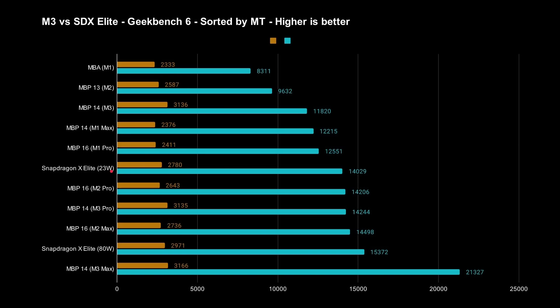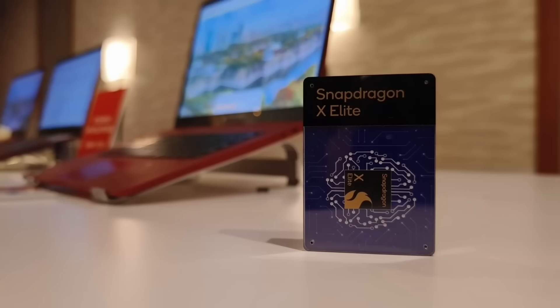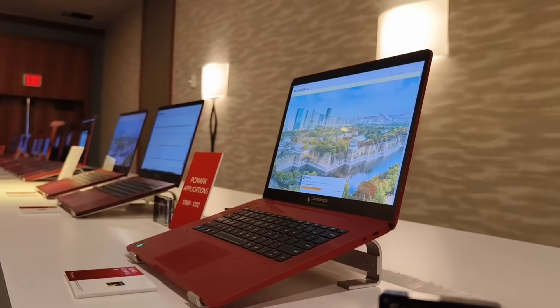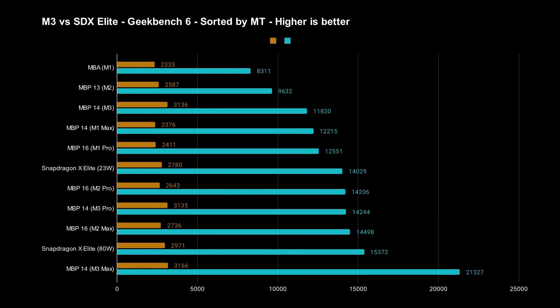This is an actual Qualcomm reference device that was on display during the tech summit Qualcomm held. It was available for journalists — they weren't allowed to play with the device, but the tests were run in front of them. There were two configurations: a 23-watt device and an 80-watt device. The 23-watt configuration gives a score of 14,000, which is in the same ballpark as the M2 Pro, M3 Pro, and M2 Max. But the Snapdragon X Elite at 80 watts scores 15,372 — meaning in multi-threaded performance, it beats every single M1, M2, and M3 processor except for the M3 Max.